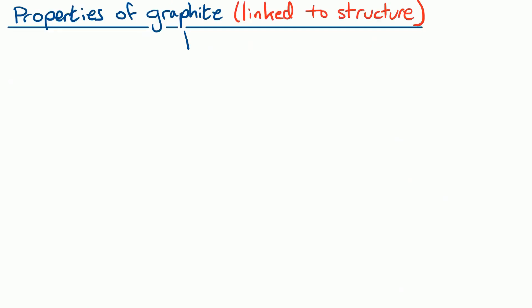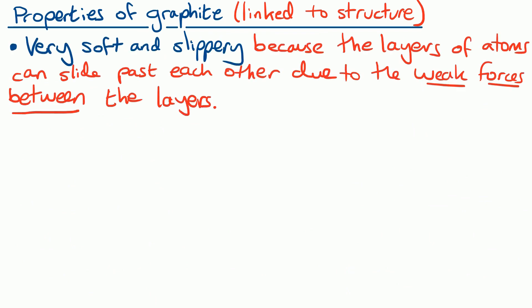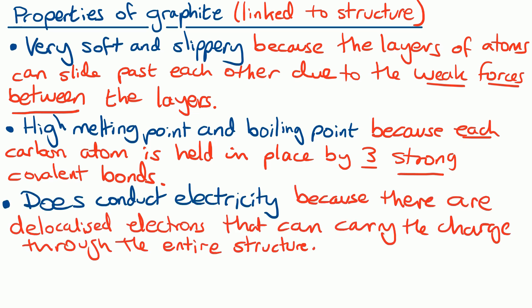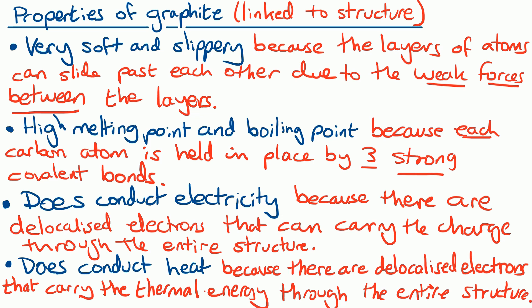If we look at the properties of graphite and explain them by talking about its structure: it's very soft and slippery. You know how easy it is to break a pencil compared to the very, very hard diamond — and it's made of the same atoms, just arranged differently. The layers of atoms can slide past each other because of those weak forces between the layers. When you use a pencil, it's dragging a few layers of carbon atoms across your page. Graphite has a high melting point and boiling point because each carbon atom is held in place by three strong covalent bonds. It does conduct electricity because it's got those delocalized electrons that can carry charge through the entire structure. It also conducts heat because those delocalized electrons can carry thermal energy through the entire structure. Make sure you can remember the four properties of graphite and the reason for each.